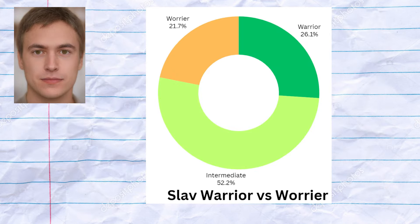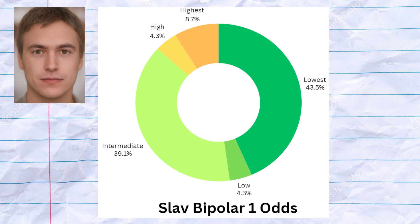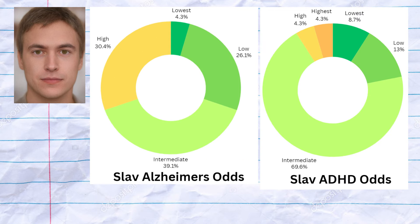Slavs seemed to have an equal predisposition to worker and warrior phenotypes. The Slavs seemed predisposed to an average availability of D2 receptor sites, which leads to average predisposition to no-go learning and schizophrenia. However, the Slavs seemed to be very protected from bipolar 1, which is probably due to the effect of other genes besides DRD2. The Slavs have an average predisposition to Alzheimer's and an average predisposition to ADHD.